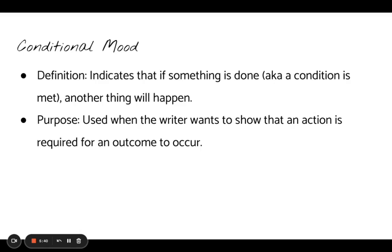Our next mood does not go with a sentence type — it is the conditional mood, the 'If You Give a Mouse a Cookie' mood. The conditional mood is used to indicate that if something is done — a condition is met — another thing will happen. It says if something happens, then something else will happen. It is like the cause and effect we see in ELA and science class. The conditional mood is used when the writer wants to show that an action is required for an outcome to occur.